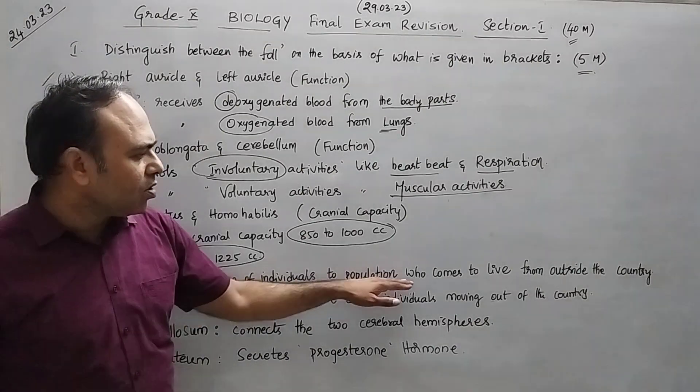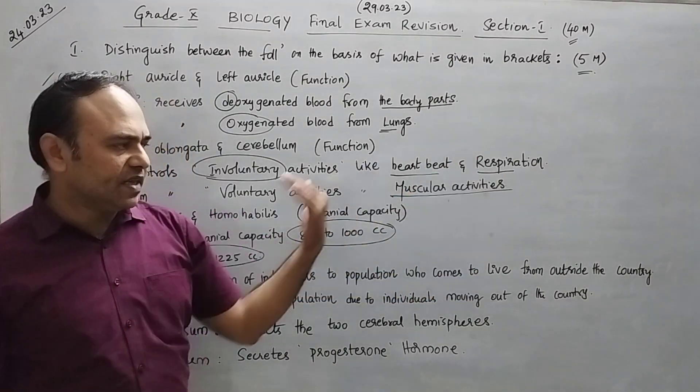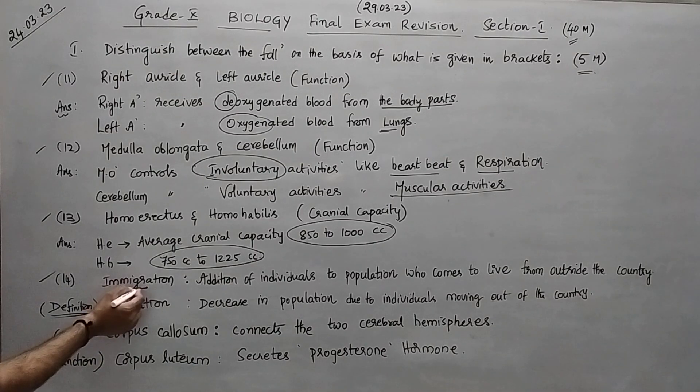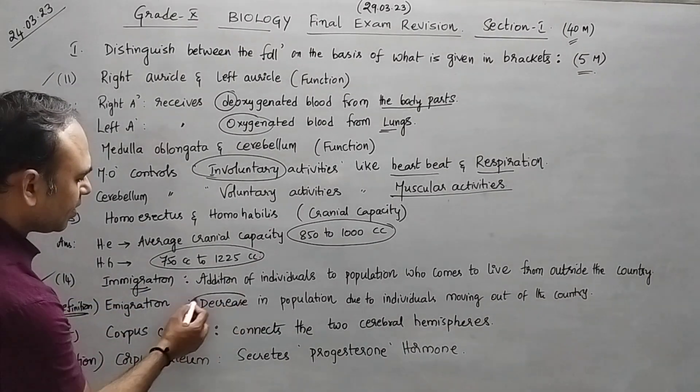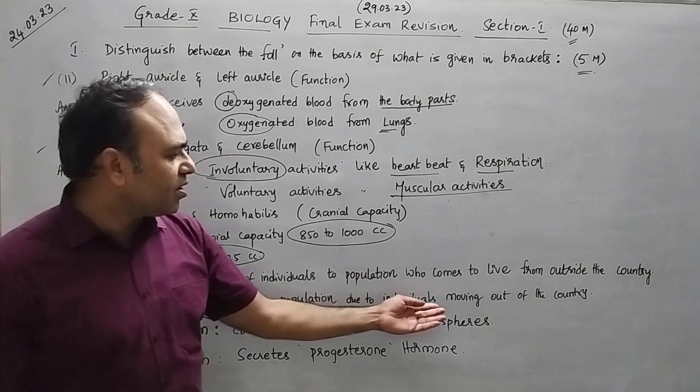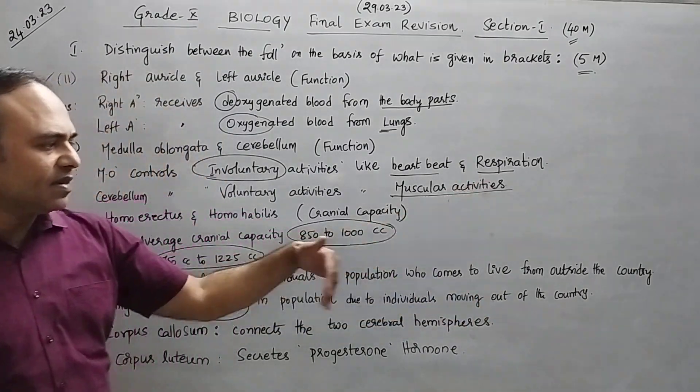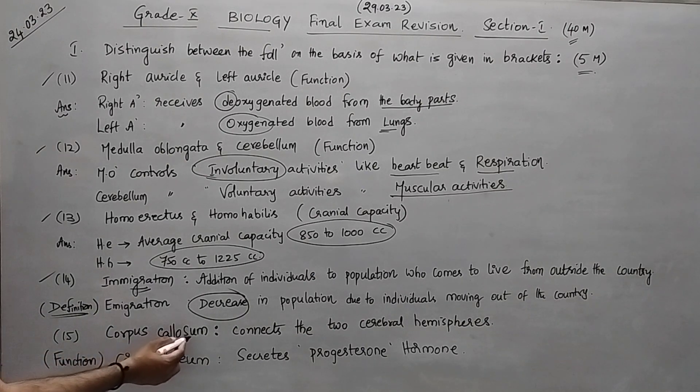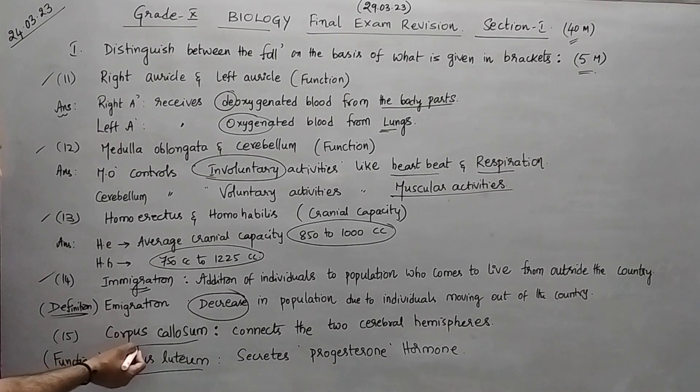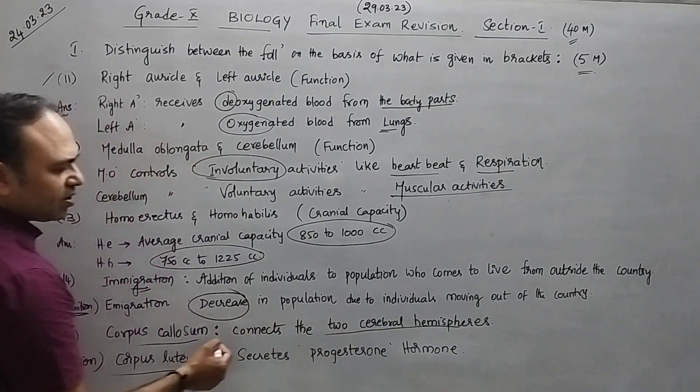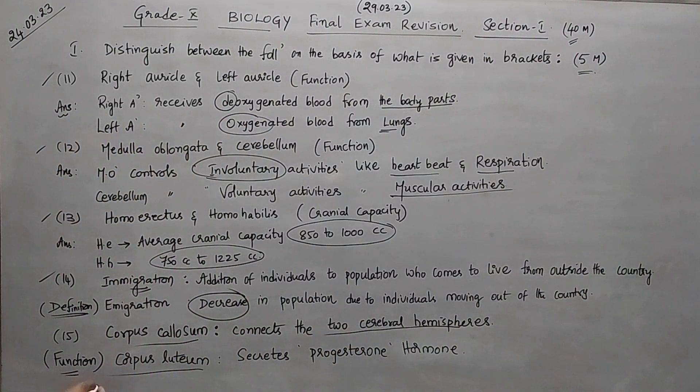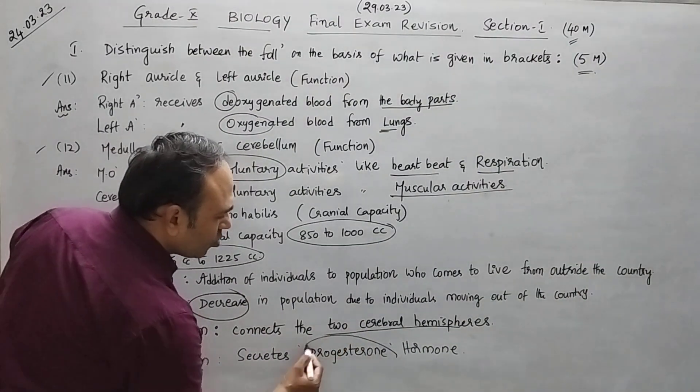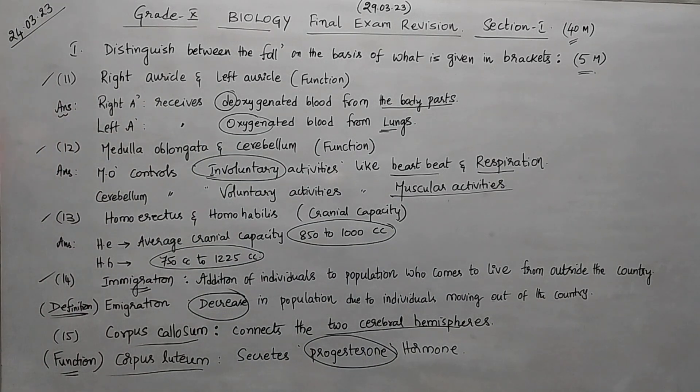Addition of the individuals who comes to live from outside the country, that is immigration. But decreasing the population - if the individuals will move out of the country and settle in some other countries, so that is the difference in the definition. Fifteen, corpus callosum and corpus luteum - how do you distinguish the functions? Corpus callosum connects the two cerebral hemispheres, this will be our function. And corpus luteum secretes progesterone hormone. Make a note of eleven to fifteen.